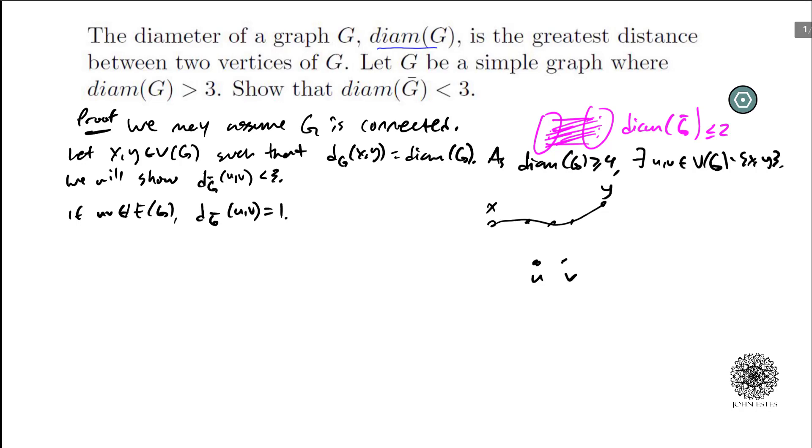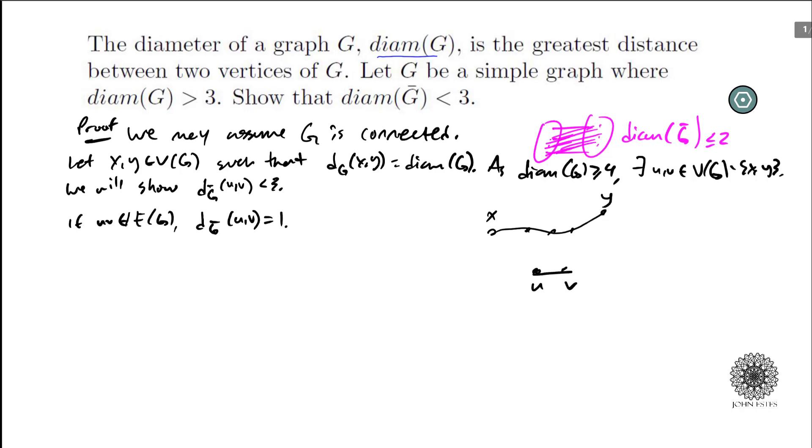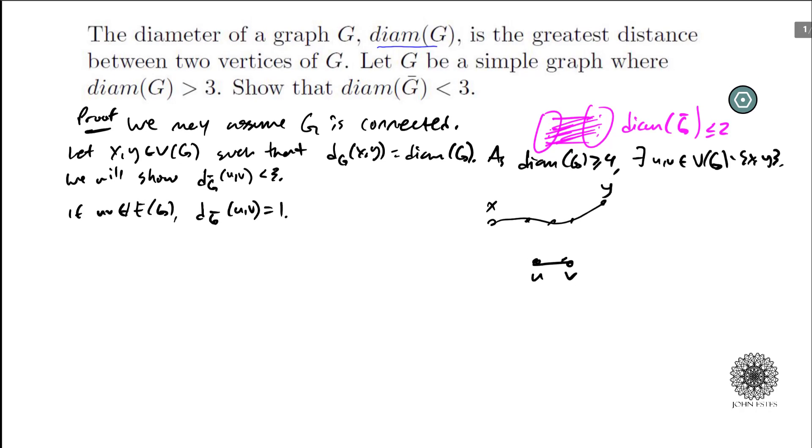They're going to be adjacent in the complement otherwise, right? So we can say then, so we can say that that case is ruled out. So let's just proceed to the next case. So we now, from now on, assume that they're adjacent.